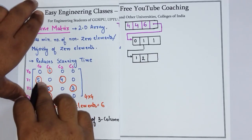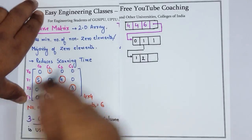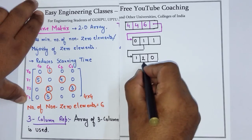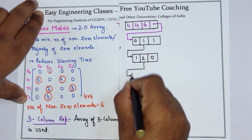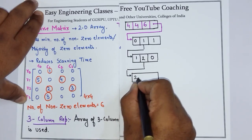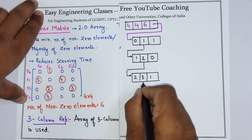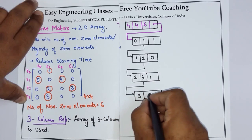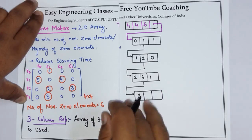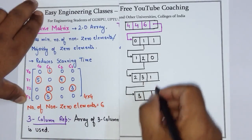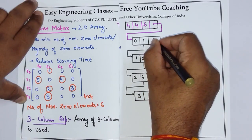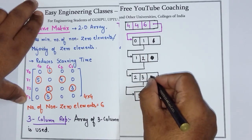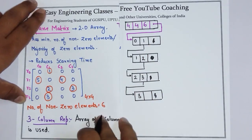Row 1 has 2 columns with nonzero elements. We will write the first column, which is column 0. Now, looking at the data, row 1 entries are 2, 3, 1. This is basically a pointer to the next column.